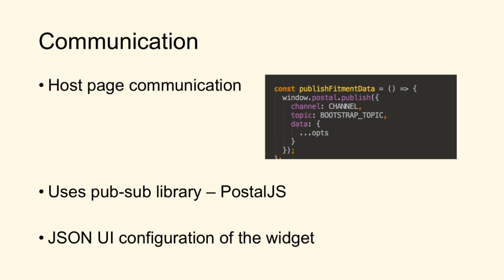For communication, we use PostalJS. This has the same semantics as server-side communication — you have a channel, topics, and so on. You publish a message to your topic and subscribers get the message from that topic. The widget is essentially a JSON configuration, and we have dependencies between nodes mentioned in the JSON file. JSON is a good format to define a configuration in which there are dependencies from the leaf nodes to the topmost nodes.